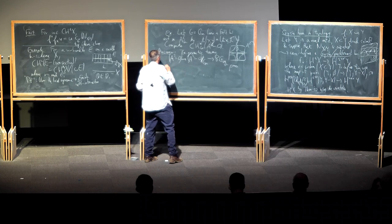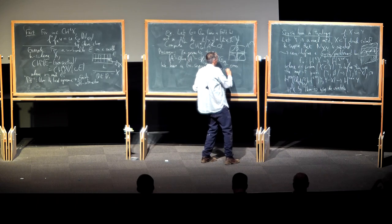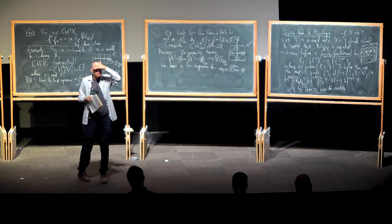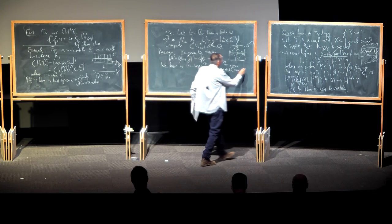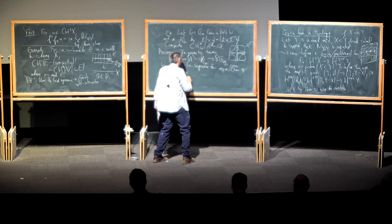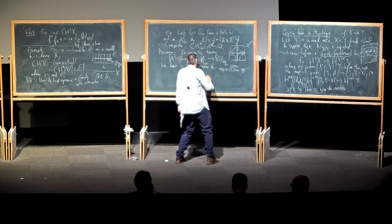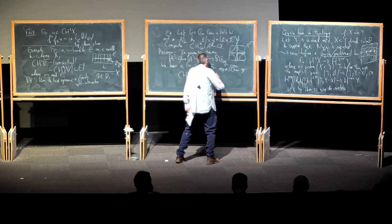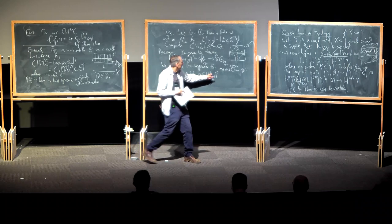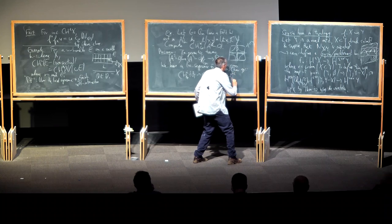We have a localization sequence for equivariant Chow groups, just as for normal Chow groups. It's obvious because equivariant Chow groups are by definition the Chow groups of some actual finite-dimensional varieties. So we get: Chow^i_G of the origin maps (with a degree shift) into Chow^i_G of A², and then Chow^{i+2}_G of A²\{0}, and so on. A codimension-i subspace of the origin has codimension i+2 in the affine plane.